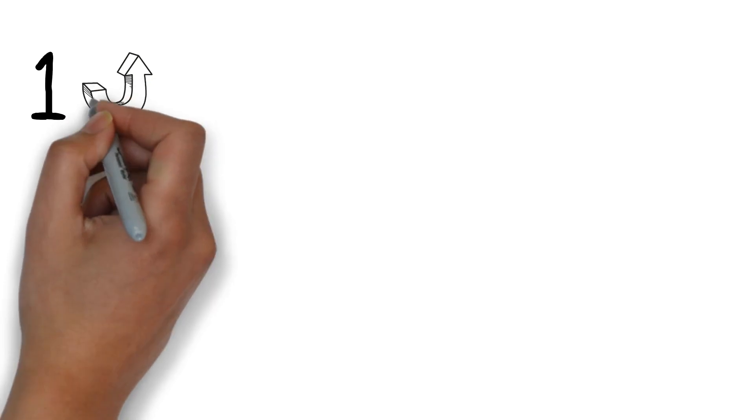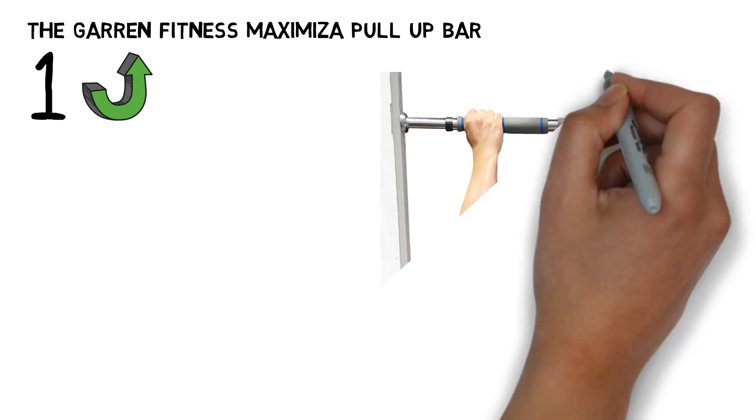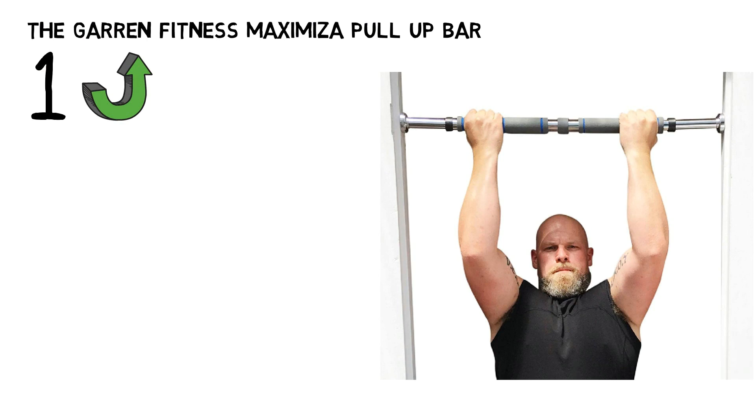Starting off at number 1 we have the Garin Fitness Maximiza Pull-Up Bar. The Garin Fitness Maximiza Pull-Up Bar is made of chrome steel and comes with 3 sets of mounting hardware. Two of the sets can support up to 300 pounds of weight.